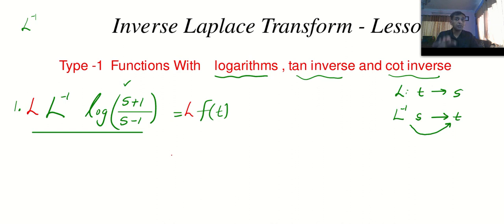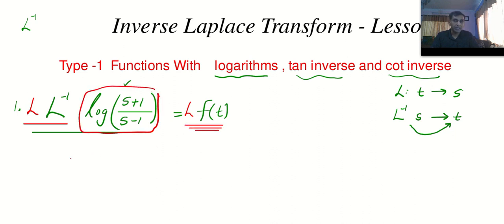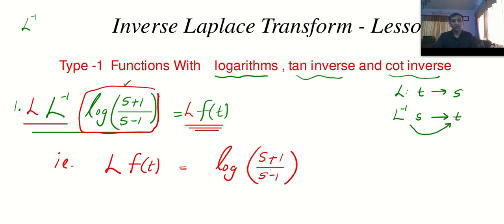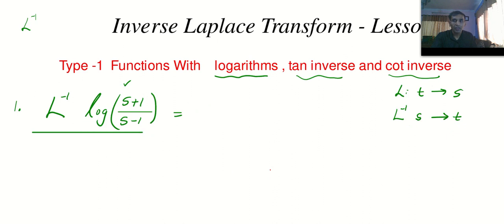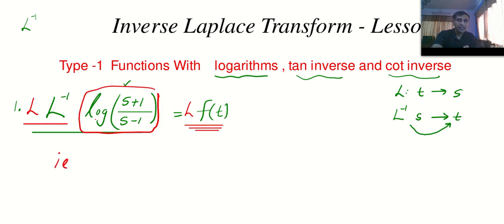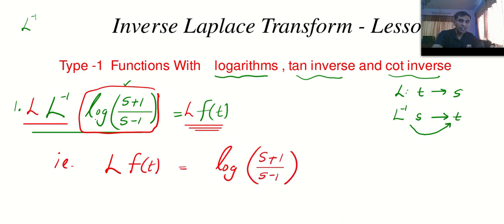Now take Laplace on both sides. This Laplace and Laplace inverse will leave the function, and the right side gives us: Laplace of f of t is equal to log of (s+1) by (s−1). So we have to find the Laplace inverse of a function involving logarithm. First I gave it the name f of t, then took Laplace on both sides, writing from right to left: Laplace of f of t equals log (s+1) by (s−1).